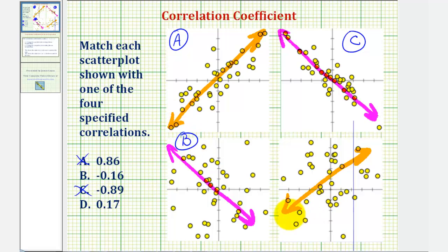For the last scatterplot, the data is scattered, but the data does tend to be increasing as x increases — the line has a positive slope. Therefore, the correlation coefficient would be D, 0.17.